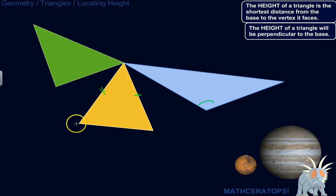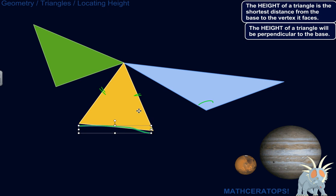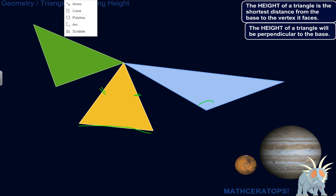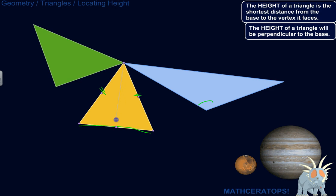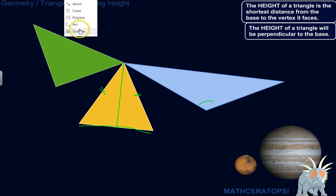We'll start with the isosceles. We'll call this the base — that'll be the easiest. The vertex that it faces is this one up top. The vertex is the corner of a triangle. So, we want the shortest distance, and it forms a right angle. If you can draw a line that forms a right angle with the base, that's the height.